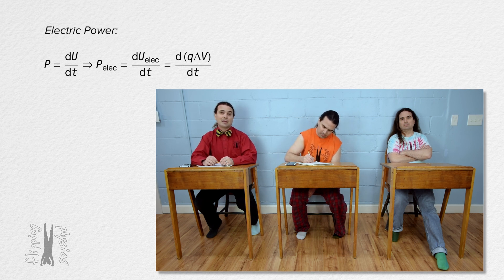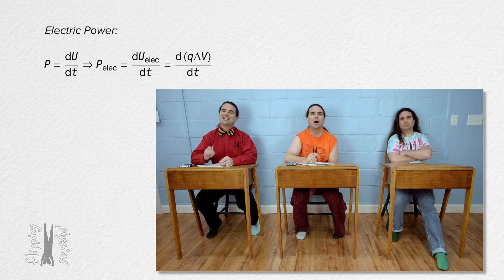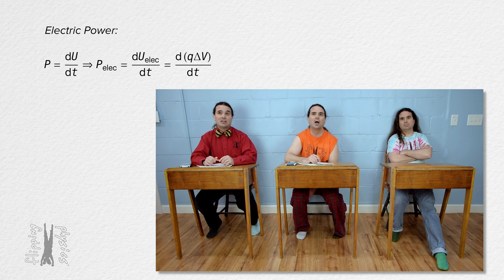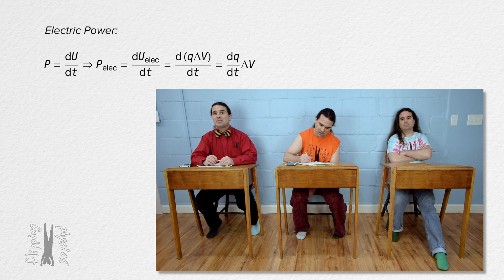Yes Billy, let's assume the electric potential difference of our circuit element is constant. Great. That means electric power equals the derivative of charge with respect to time times electric potential difference. And the derivative of charge with respect to time is electric current.